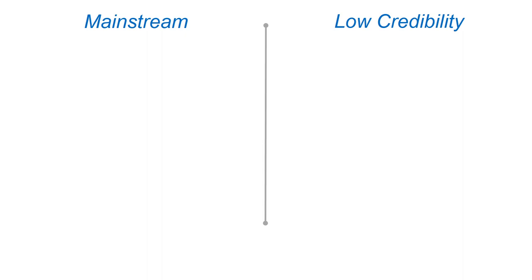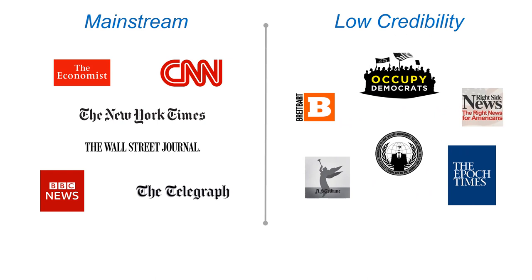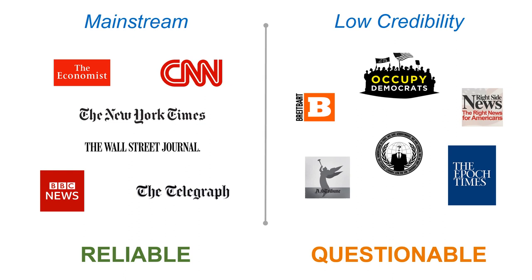FAKEY uses public APIs to extract articles from mainstream and low-credibility sources. For mainstream news, we manually selected 32 sources with a balance of moderate-liberal, centrist, and moderate conservative views. We chose low-credibility sources based on flagging by various reputed fact-checking organizations. We consider these sources as low-credibility because they tend to publish fake news, conspiracy theories, clickbait, rumors, junk science, and other questionable content. For instance, it has been found that 82% of tweets that link to articles from these sources make claims classified as misinformation.